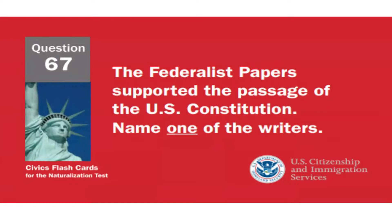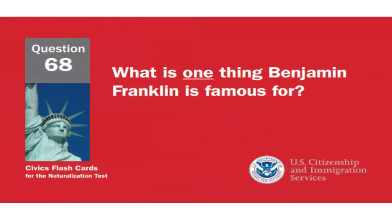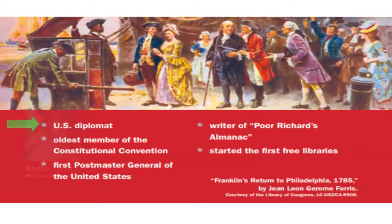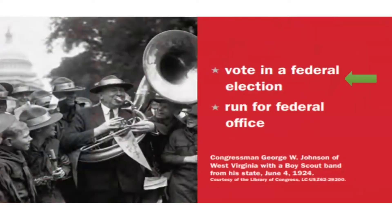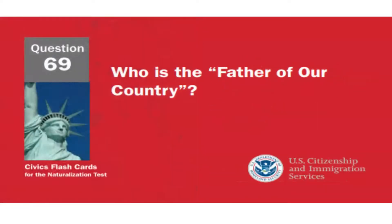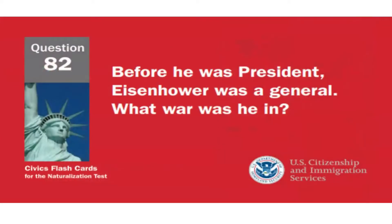The Federalist Papers supported the passage of the U.S. Constitution — name one of the writers. James Madison. What is one thing Benjamin Franklin is famous for? U.S. diplomat. Name one right only for United States citizens. Vote in a federal election. Who is the father of our country? George Washington.